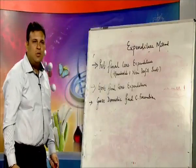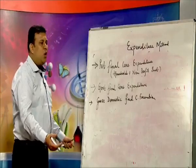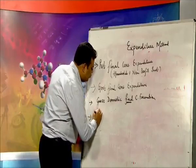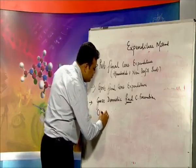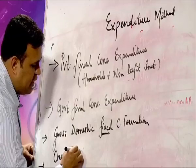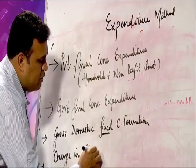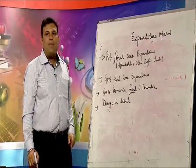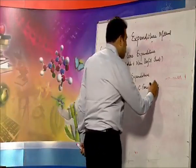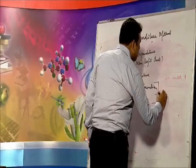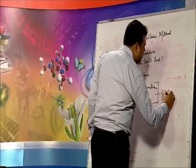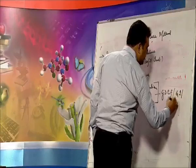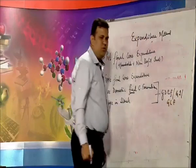Fixed assets include residential construction, purchase of plot, land — anything. So this is fixed. If it is fixed, you have to separately take change in stock, that is your inventory. If you are holding or stocking any inventory, that is also part of capital formation. Both together give you gross domestic capital formation, gross investment, or gross capital formation.